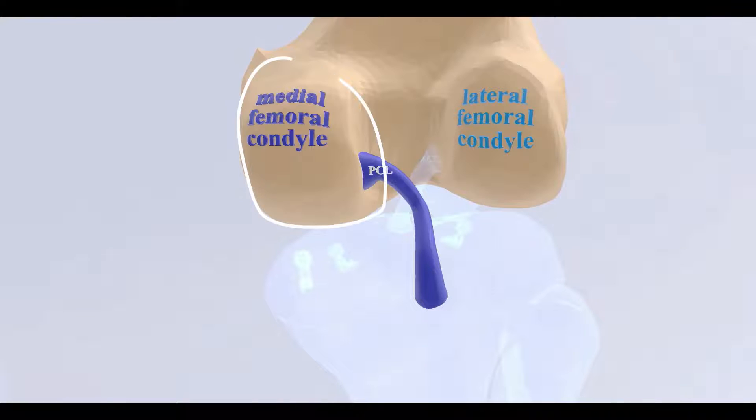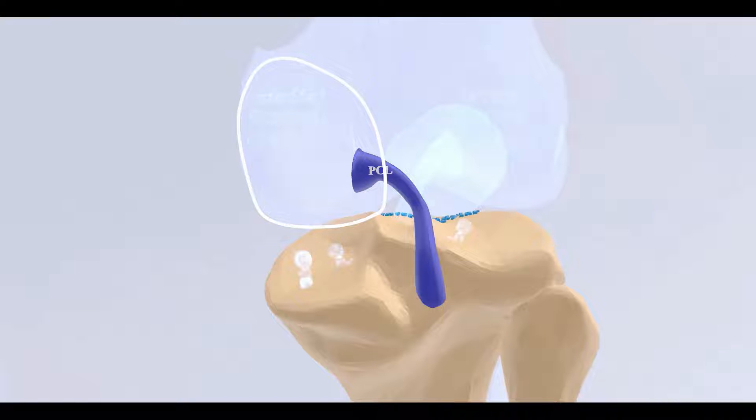Now here we see the PCL. The PCL originates from the medial femoral condyle and it inserts at the back of the plateau of the tibia — that's why it's called posterior.